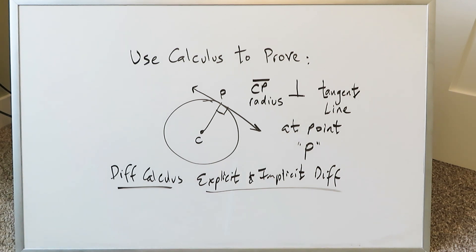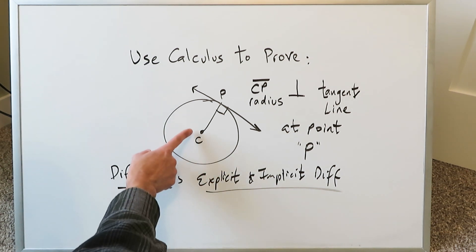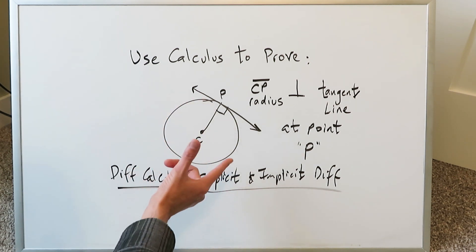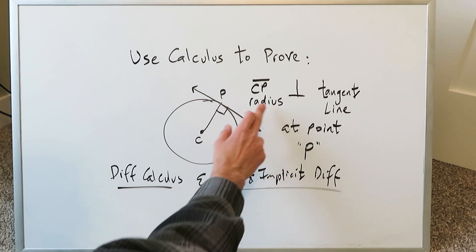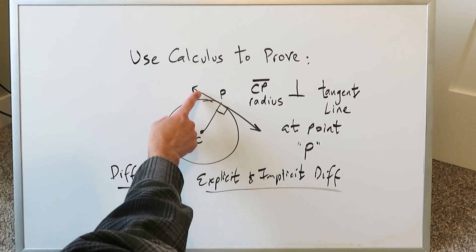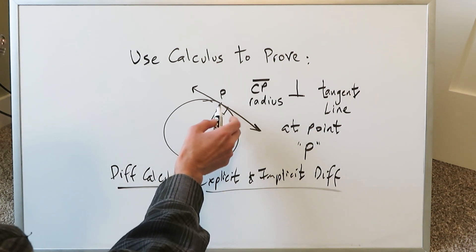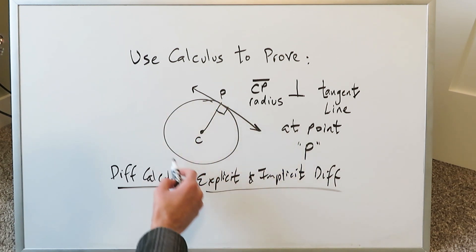By both explicit and implicit differentiation techniques to prove the following case: that if you were to connect a segment from the center to any point on the circle, that segment, of course, would be your radius. That radius, when related to a tangent line at that specific point P, both of those are always perpendicular to each other. In essence, you're showing that the radius here is perpendicular to a tangent line at any point on the circle, and let that point be P.